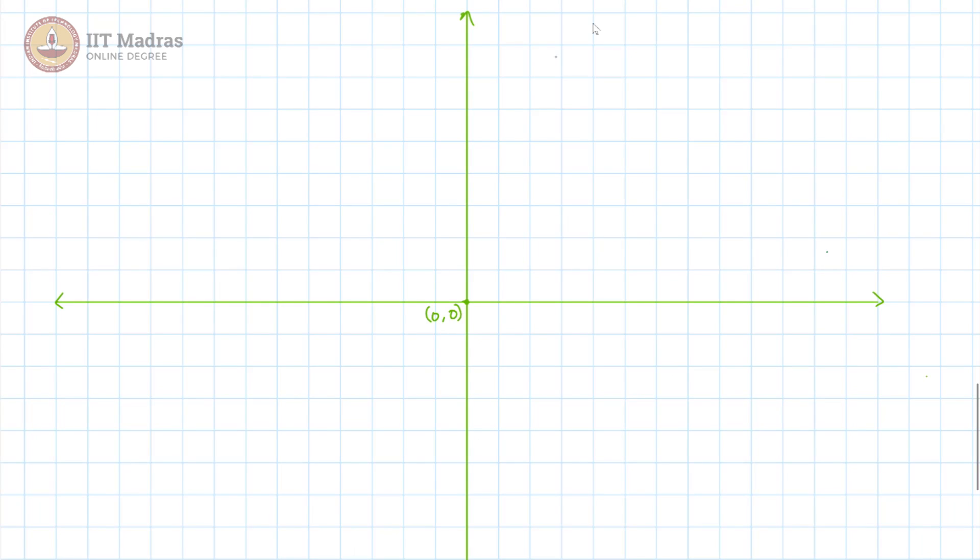This is our origin and our line equation is 7y is equal to 56 minus 8x. In order to draw this line, we need two points, two points are enough.